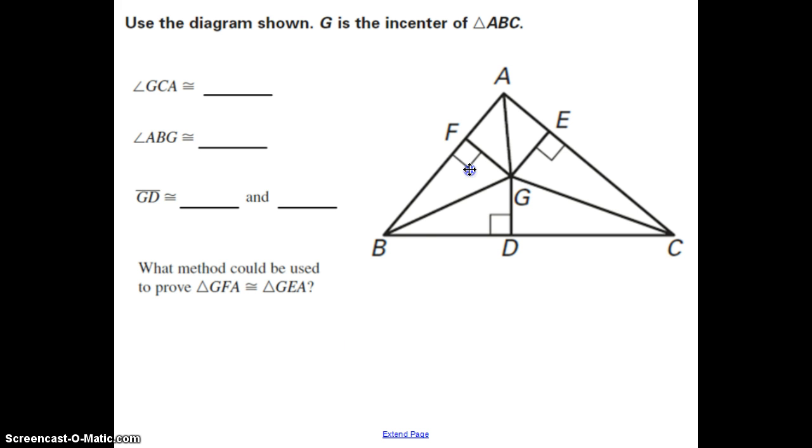We use the diagram shown, and it tells us that G is the incenter of triangle ABC. If G is the incenter, that means that these segments here, AG, BG, and GC, are the angle bisectors of triangle ABC. So I'm going to go ahead and make these markings to show us which angles are congruent to each other.